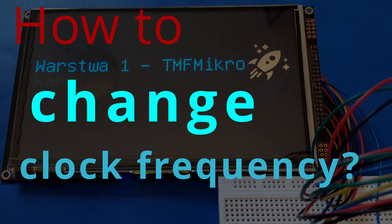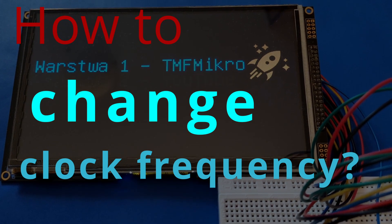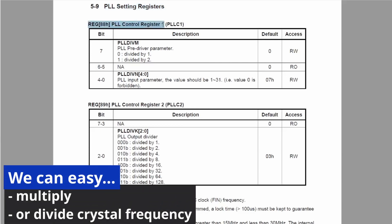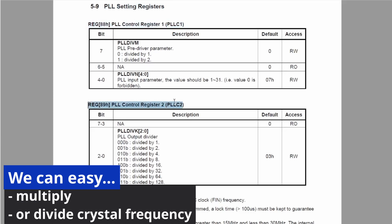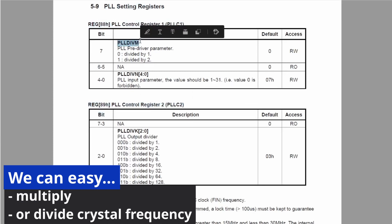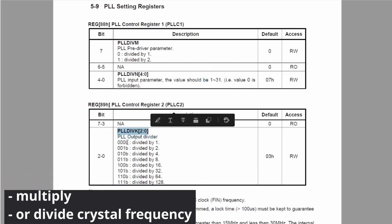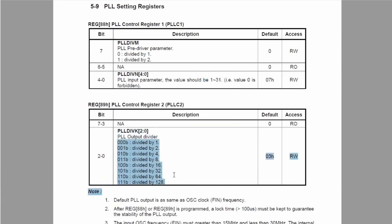Our first problem is: how do we change the system clock frequency? The solution is quite simple, as the RA8875 has two registers responsible for frequency adjustments. PLL Control Register 1 has a simple divide-by-two and PLL for frequency multiplication in a range from 1 to 31. The second register, PLL Control Register 2, has a programmable divider.